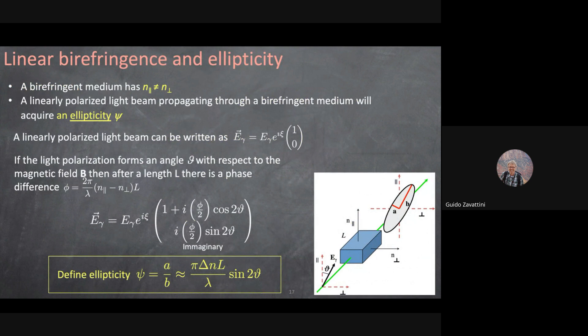Birefringence is a local quantity of a medium; you don't measure it directly — you measure ellipticity. If you enter a birefringent medium with two different axes and an electric field at a certain angle, you decompose it into perpendicular and parallel components. These propagate independently, and since the two indices of refraction differ, one acquires a phase delay relative to the other. When they recombine, the electric field traces an ellipse — giving elliptical polarization.